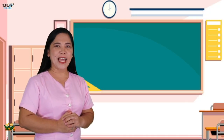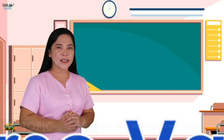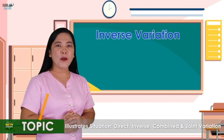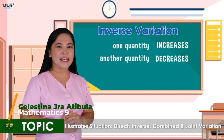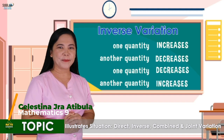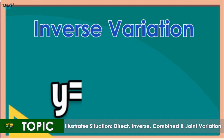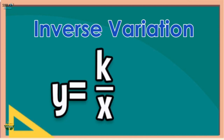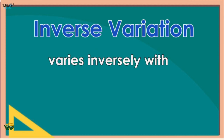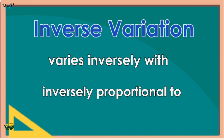Let's proceed to the second type: inverse variation. Here, when one quantity increases, the other quantity decreases, or vice versa. The equation of an inverse variation is y = k/x, where k is the constant of variation. Clue words include 'varies inversely with' and 'inversely proportional to.'